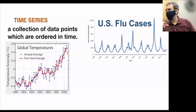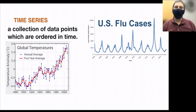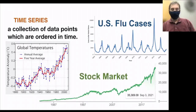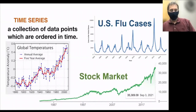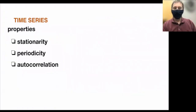Notice the difference between these two. Flu cases have some seasonality to them. Global temperature seems to show a general trend upward. The stock market, different once again, going back about 30 years, also shows a general trend up with large drops, but then slowly making its way back up.